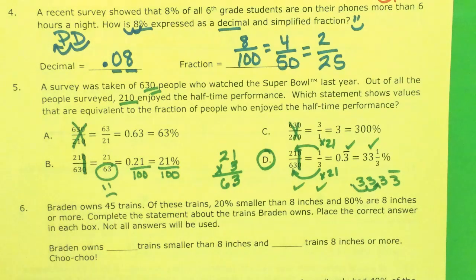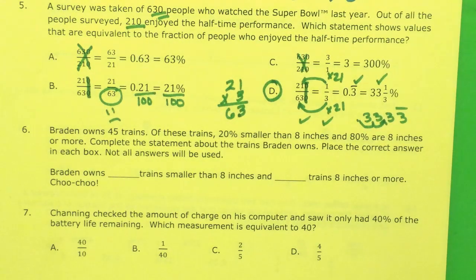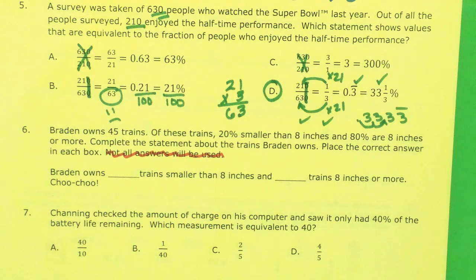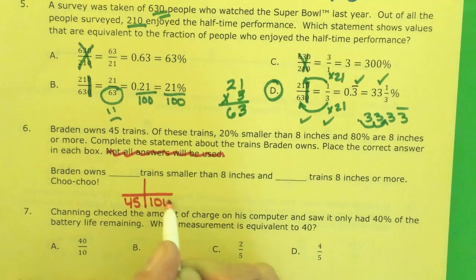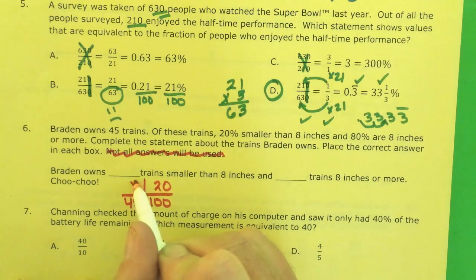Number six. Brayden owns 45 trains. Of these trains, 20% are smaller than 8 inches, and 80% are 8 inches or more. Complete the statement about the trains Brayden owns. Place the correct answer in each box. Brayden owns how many trains that are smaller than 8 inches? Well, I know he owns 45 total trains. That is 100% of his trains. I know 20% are smaller than 8 inches. So I've got to figure out what this number is.